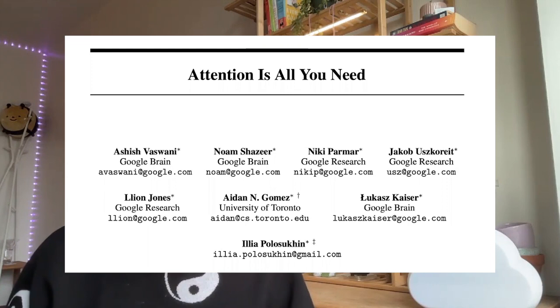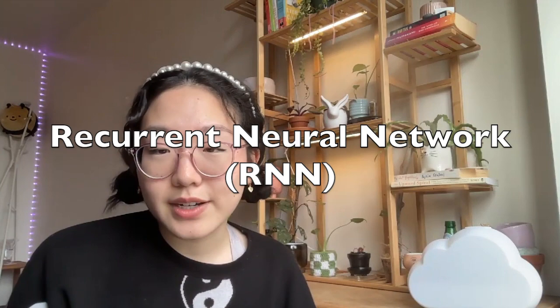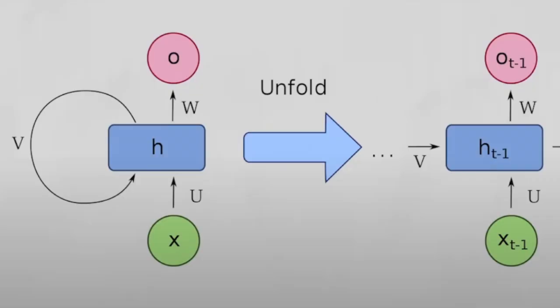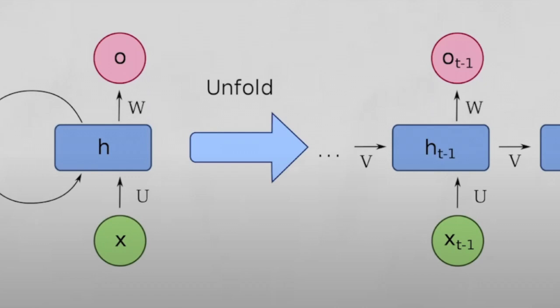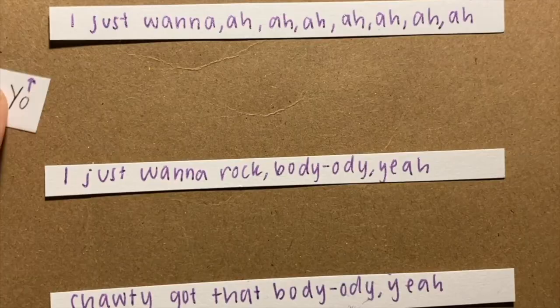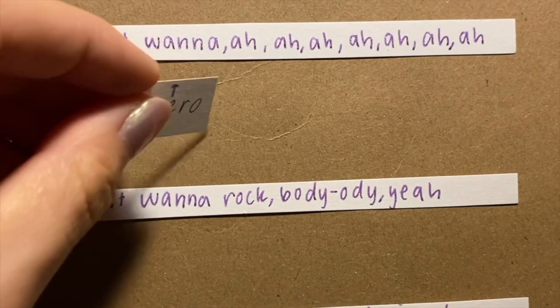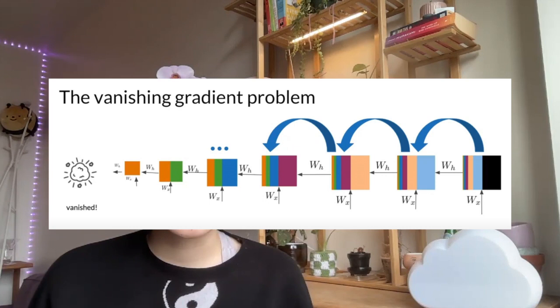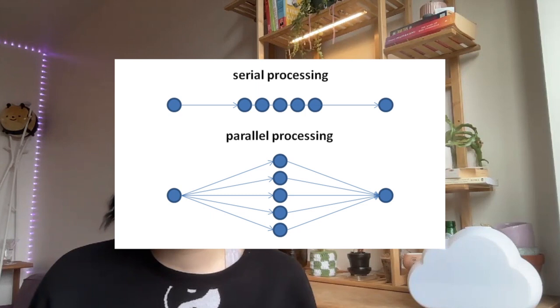The transformer architecture was first introduced in a 2017 paper by Google researchers and has since revolutionized the field of natural language processing. Prior to the transformer, most neural networks used for language tasks employed a type of architecture called recurrent neural networks, or RNNs. RNNs process sequences of data by passing the output of one time step as input to the next. While RNNs were effective at processing sequences, they had limitations: they have difficulty processing longer sequences as the gradients will become very small or almost vanish as passed through many layers. Additionally, RNNs were unable to fully take advantage of parallel computing as they needed to process the sequence one time step at a time.